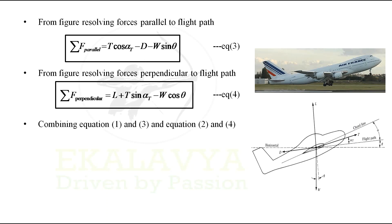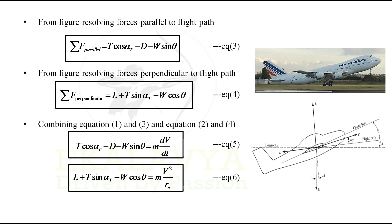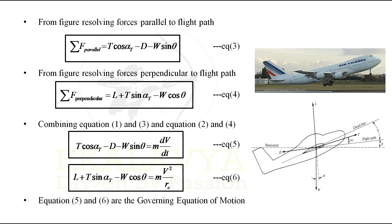Now combining equations 1 and 3, since their left-hand sides are the same (summation of forces parallel to the flight path), we get: T cos(alpha_T) − D − W sin(theta) = m dV/dt. Let us denote this as equation 5. Similarly, combining equations 2 and 4, we get: L + T sin(alpha_T) − W cos(theta) = mV²/rc. Let us denote this as equation 6. These two equations — equation 5 and equation 6 — are the governing equations of motion for an aircraft in flight.